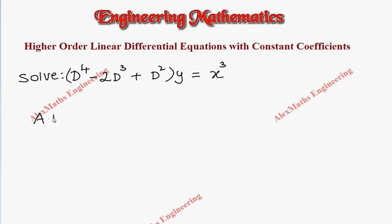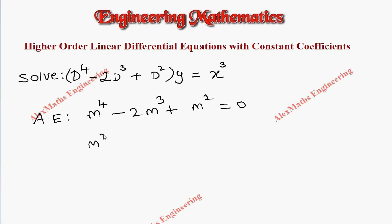As per the procedure, first we have to write the auxiliary equation, which is m⁴ - 2m³ + m² = 0. We can take m² common, so it will become m²(m² - 2m + 1) = 0.